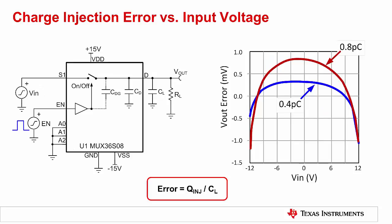This slide explains how charge injection for a given multiplexer can affect output voltage. Assume two multiplexers with charge injection as the only differentiating factor: one has a charge injection of 0.4 picocoulombs and the other has 0.8 picocoulombs. Each multiplexer has an output load capacitance of 10 nanofarads on the drain pin. When the switch is turned on or off, the parasitic drain-to-gate capacitor pumps charge into or out of the output load capacitor. The output voltage error equals the charge injected divided by the load capacitance: error equals Q injected divided by CL. Note that the amount of charge injected also varies with input voltage, so this effect is nonlinear in nature.